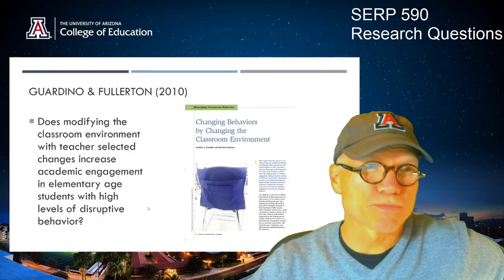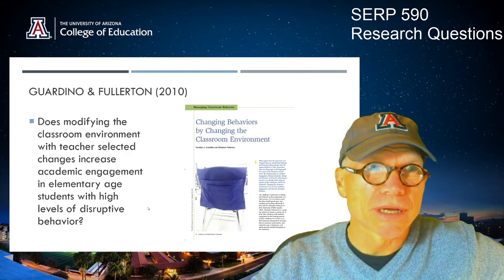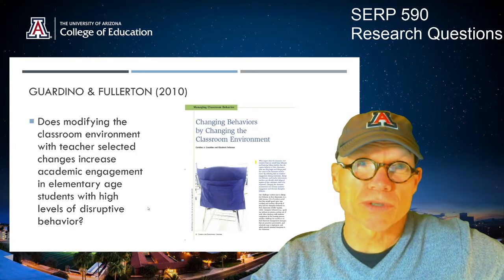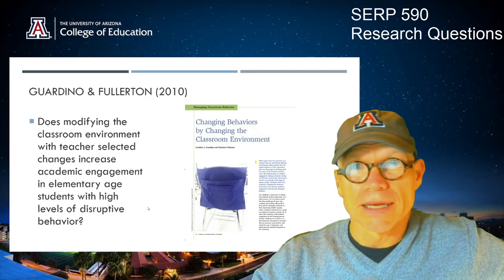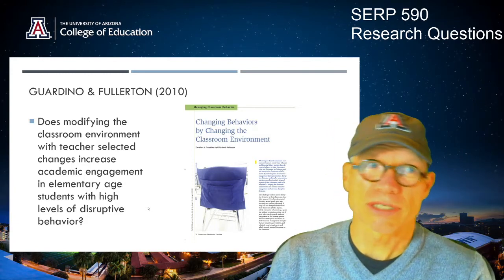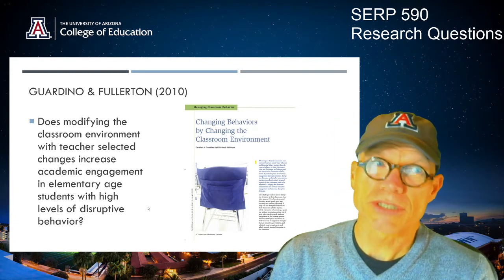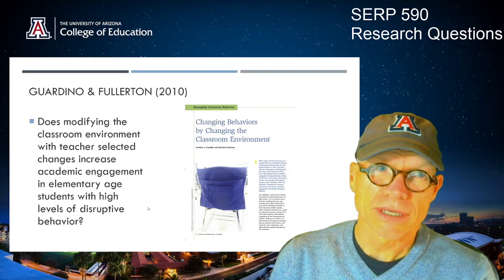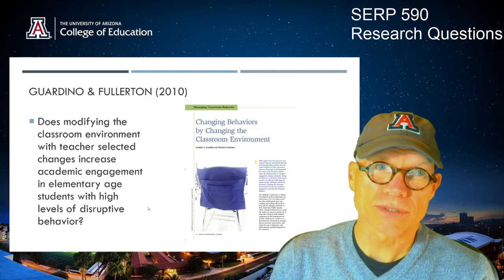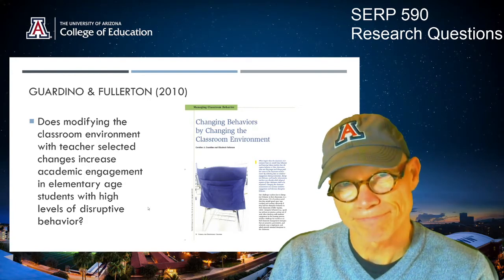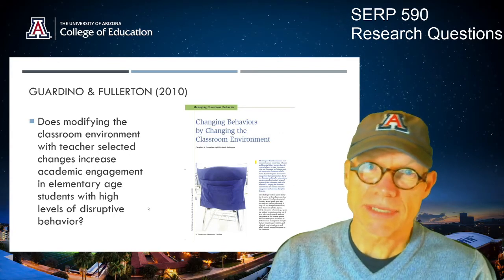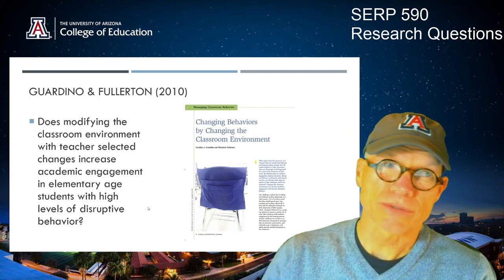Let's start someplace that should look really familiar. This is Gardino and Fullerton 2010, which was the first article we looked at in this course. The research question in Gardino and Fullerton is: does modifying the classroom environment with selected changes increase academic engagement in elementary age students with high levels of disruptive behavior? So let's look at what makes that a single case design research question.